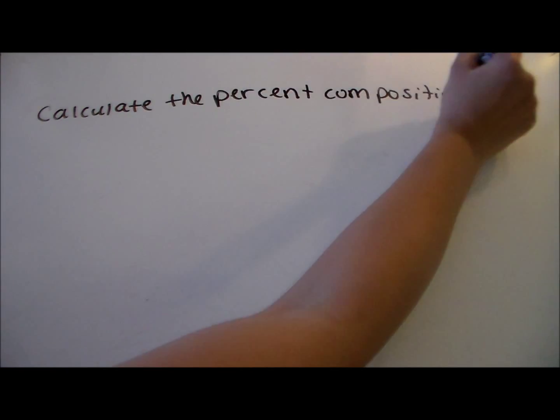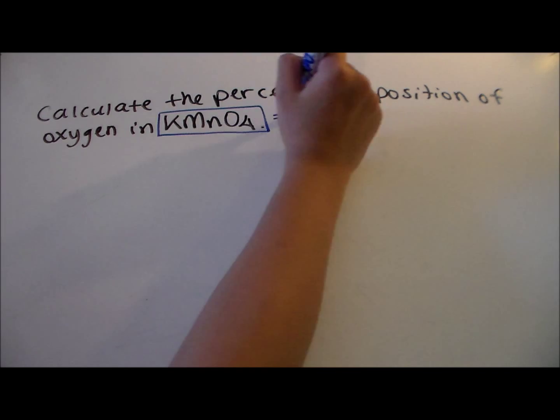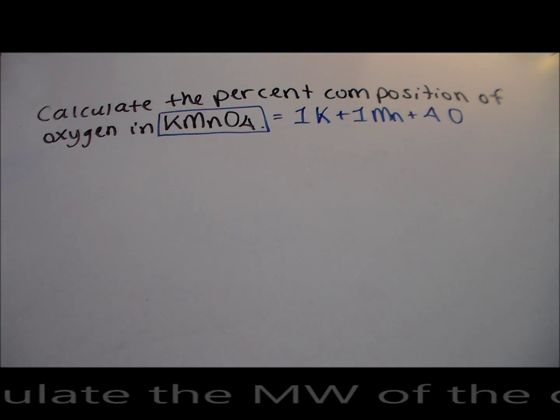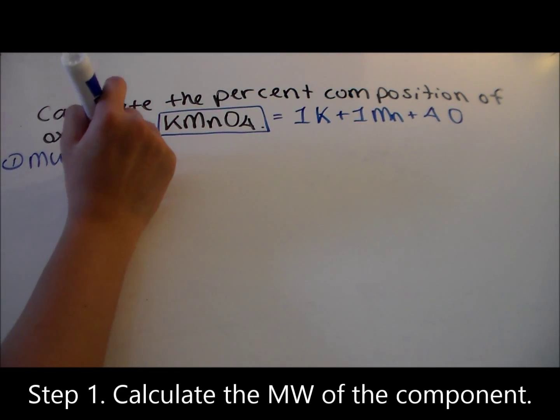Say we want to calculate the percent composition of oxygen in KMnO4, potassium permanganate. The first step is to calculate the molecular weight of the component, in this case, oxygen.